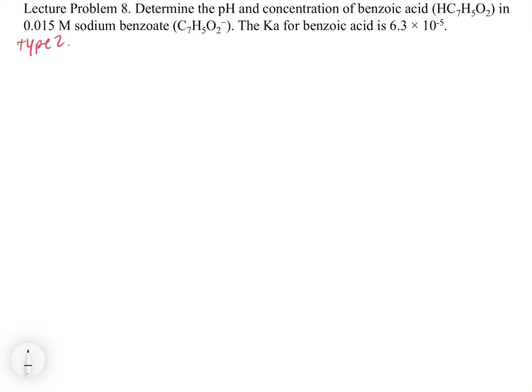The problem says: determine the pH and concentration of benzoic acid in a solution of 0.015 molar sodium benzoate. The Ka for benzoic acid is 6.3 times 10 to the minus 5. We have sodium benzoate, NaC7H5O2, and we need to identify if it's going to be a basic or acidic solution.